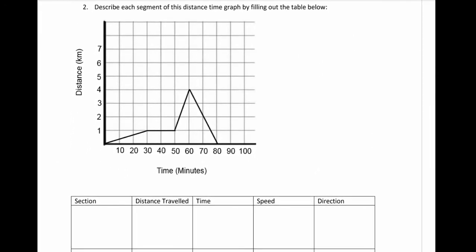In the next part, we're going to look at the same idea and figure out the distance traveled, the time, the speed, and the direction for a new graph. We'll break this down into sections color-coded as A, B — the flat line — C, and D.